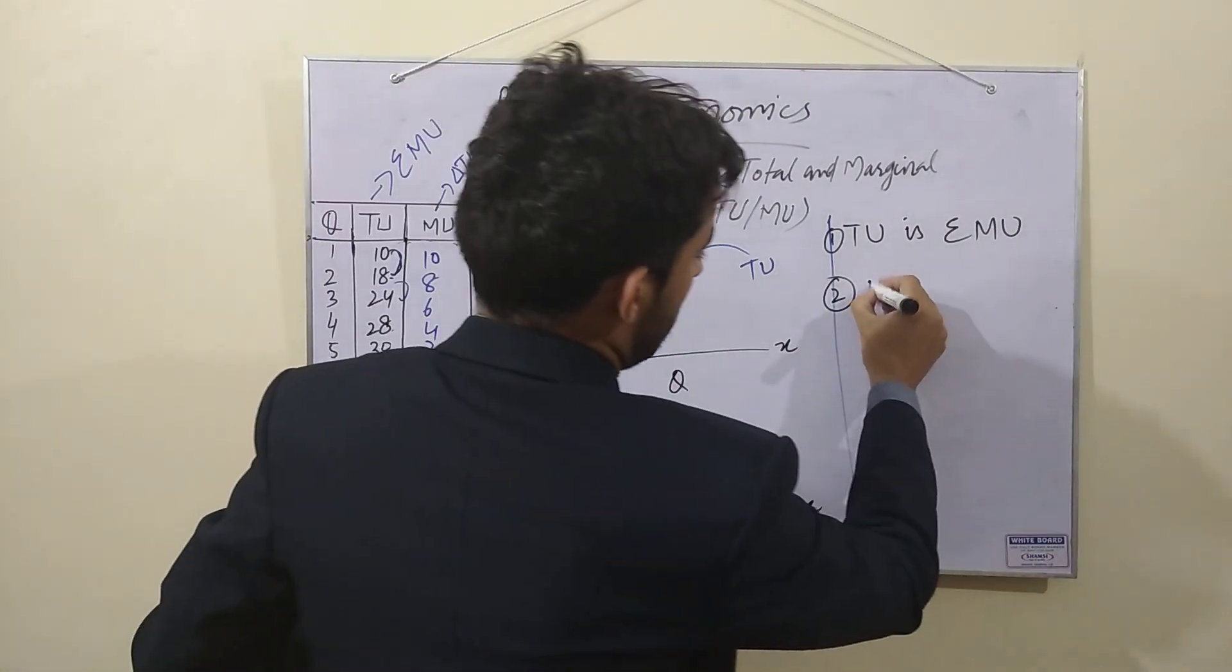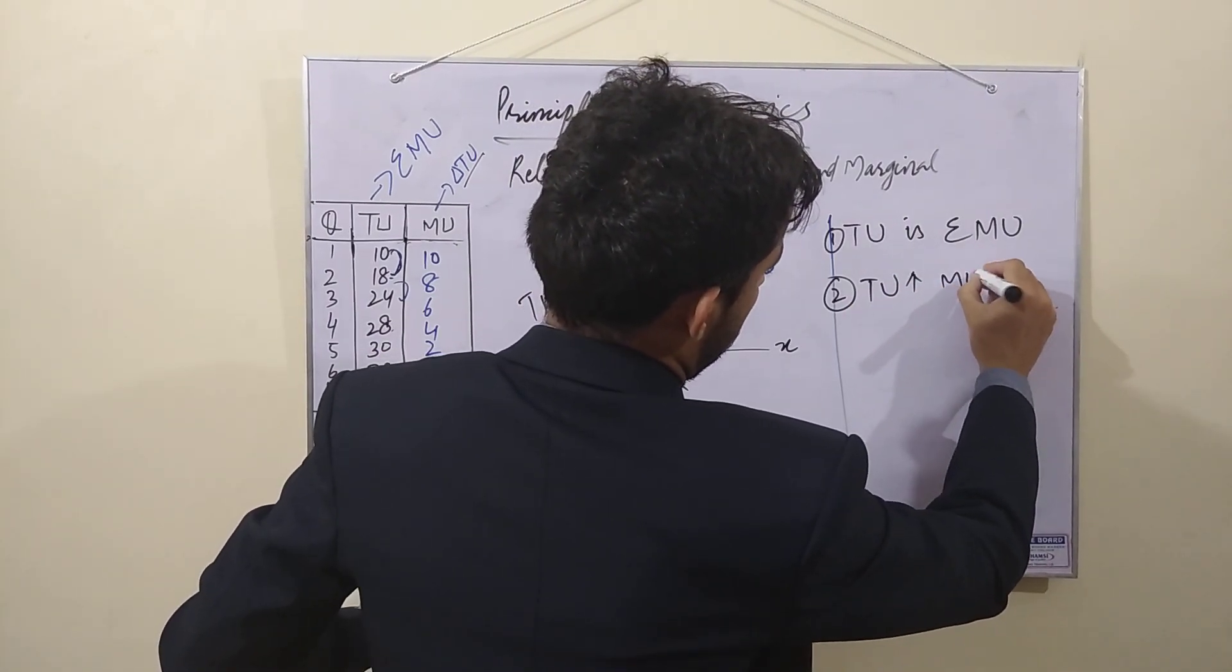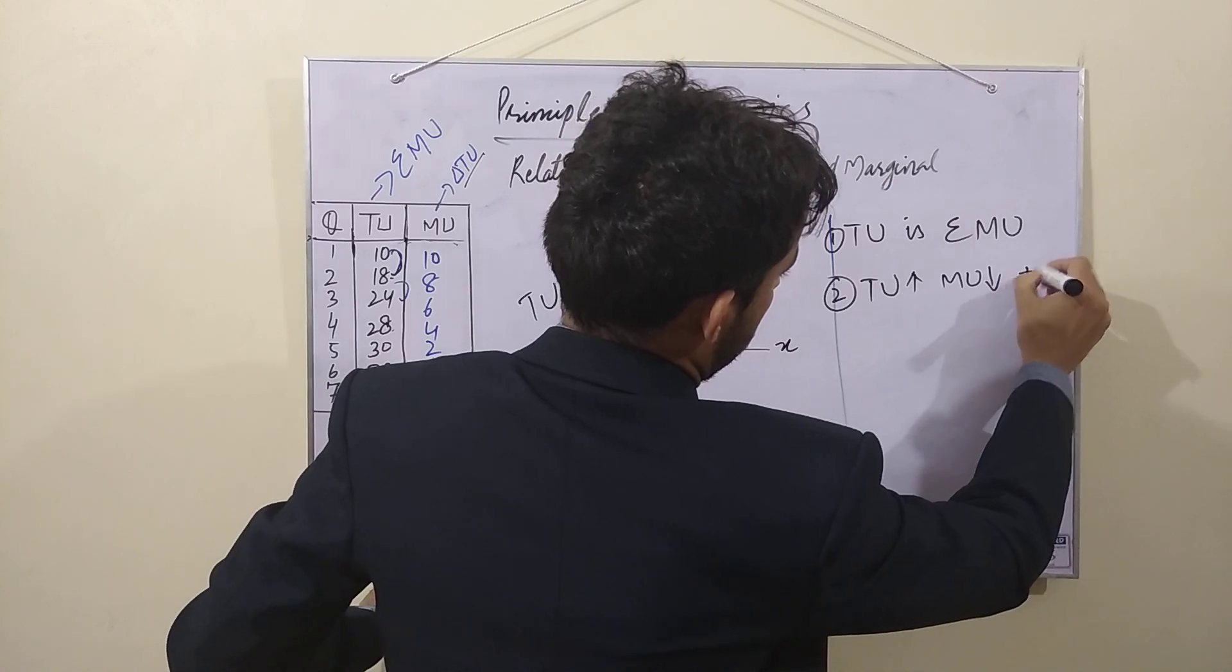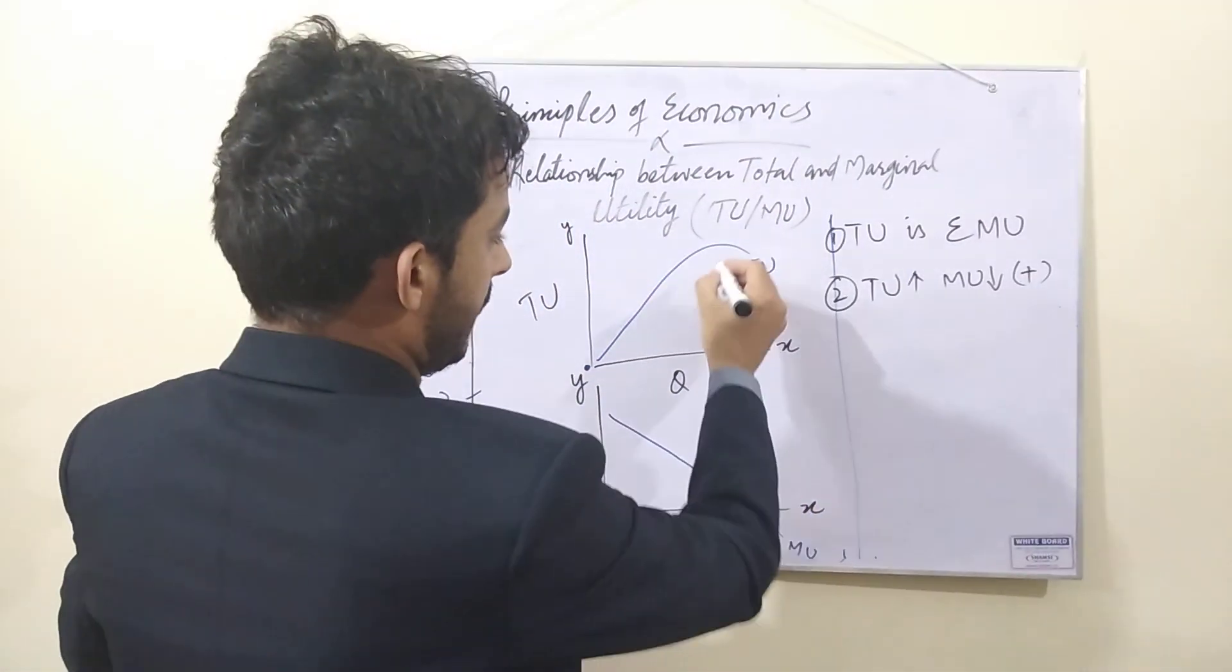Second relationship: when total utility increases, then marginal decreases. Total utility increases, marginal utility decreases, but it is positive. Decrease but positive.